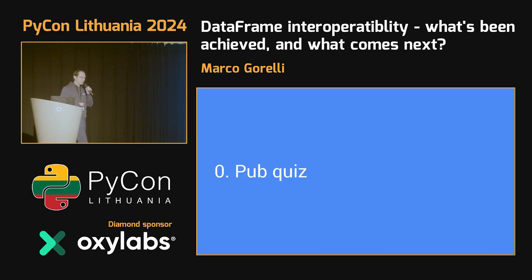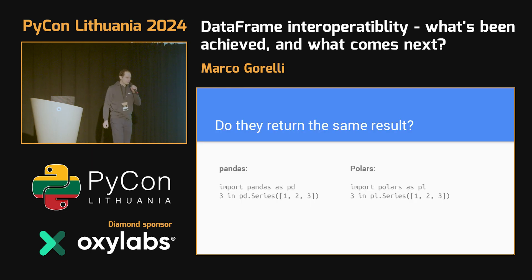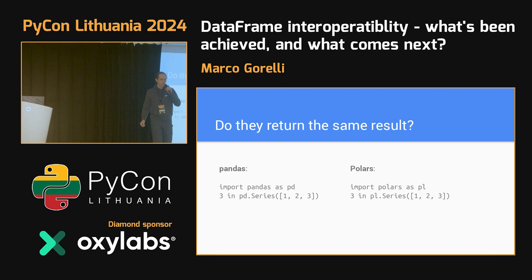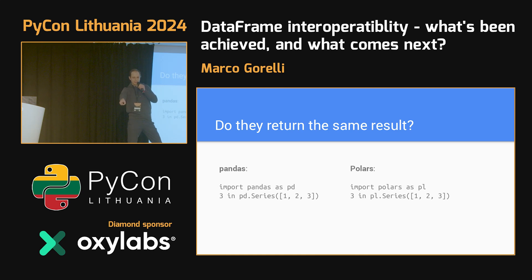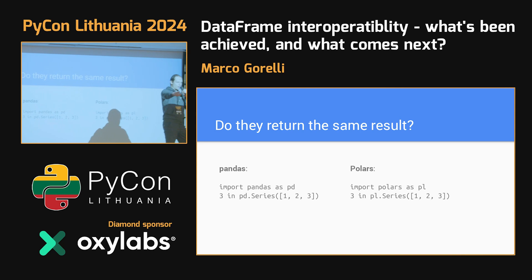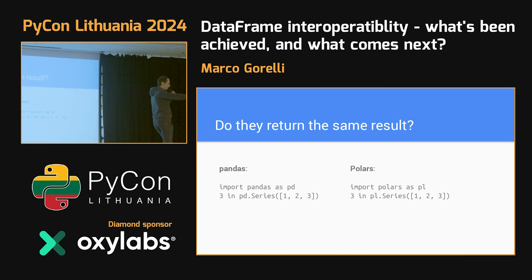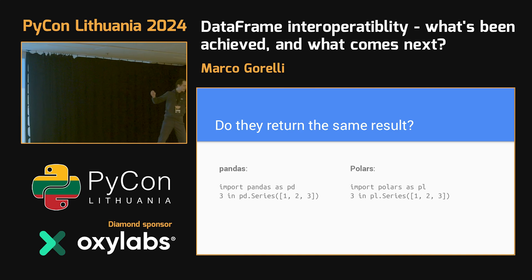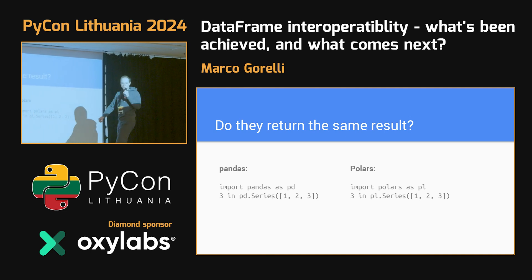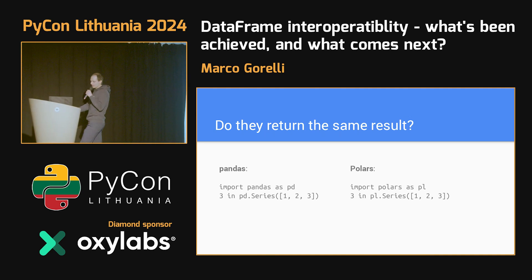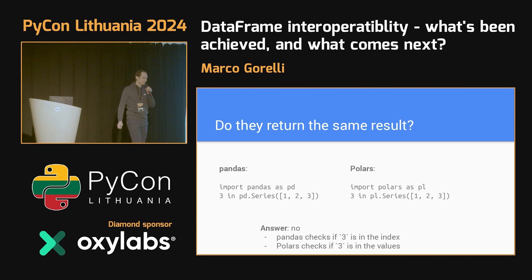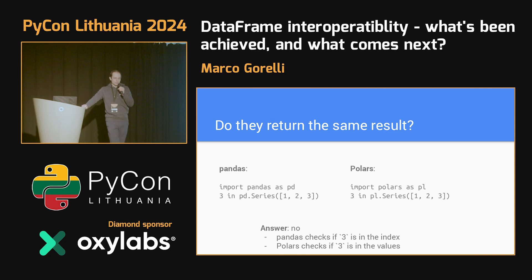Let's play a game called 'do they return the same result, yes or no.' On the left we've got some pandas code, and on the right we've got some polars code. The answer, in fact, is no. Pandas checks if 3 is in the index, and polars checks if 3 is in the values. So, as I wanted to demonstrate, writing data frame agnostic code is tricky. And that's where today's talk comes in handy.